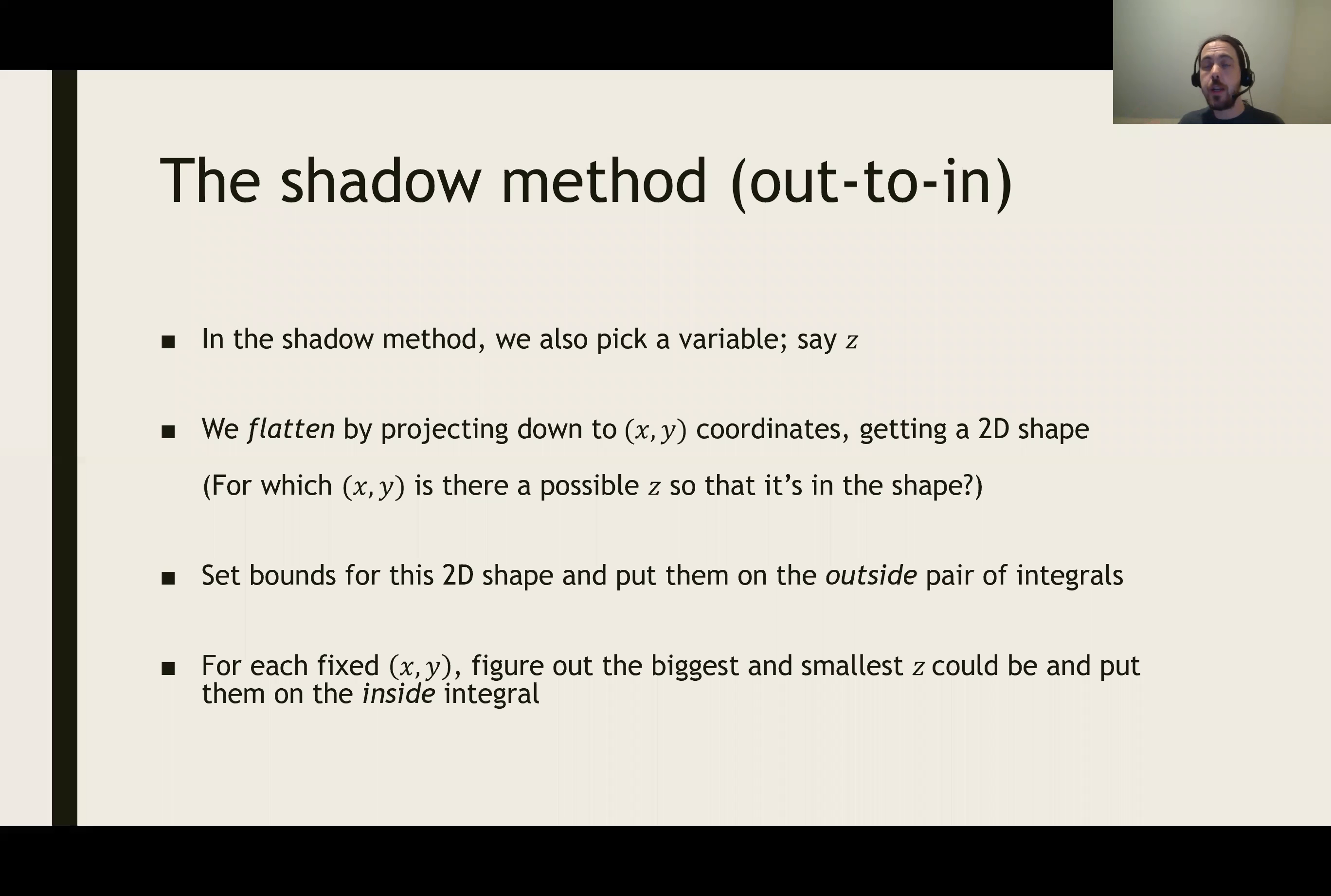The other main method for setting up the bounds for a triple integral is called the shadow method. The shadow method goes outward to inward. In this case, we also pick a variable, let's say we pick the z variable, and then we flatten our shape. We project down our shape and crush it down in that direction. We get rid of the z coordinate.